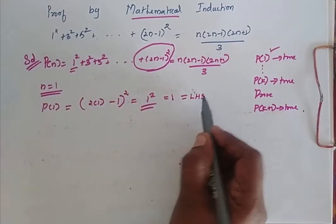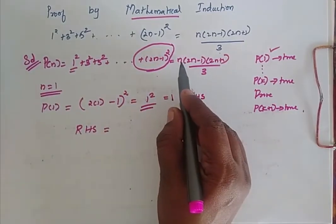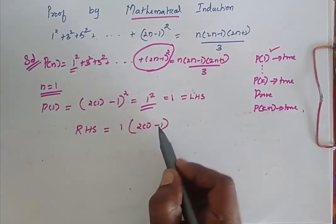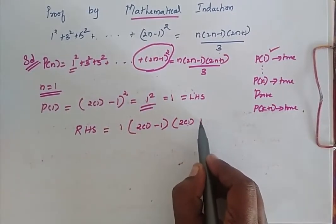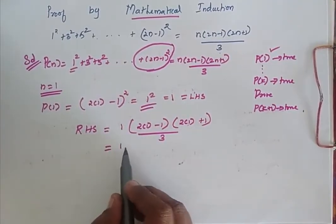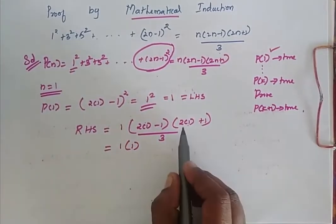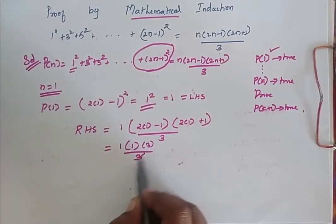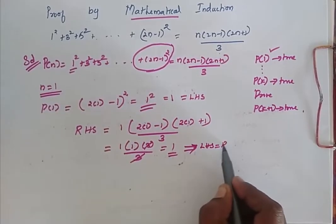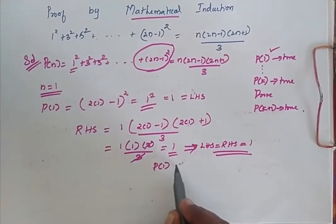This is my LHS. Now when I go for considering my RHS, my RHS is equal to, instead of N, I am going to replace 1. So 1 into 2 into 1 minus 1 into 2 into 1 plus 1 by 3. So this is equal to 1 into 2 into 2 into 1 into 3 by 3. So 3 and 3 will get cancelled and it is 1. So here LHS is equal to RHS is equal to 1. So my P of 1 is true.